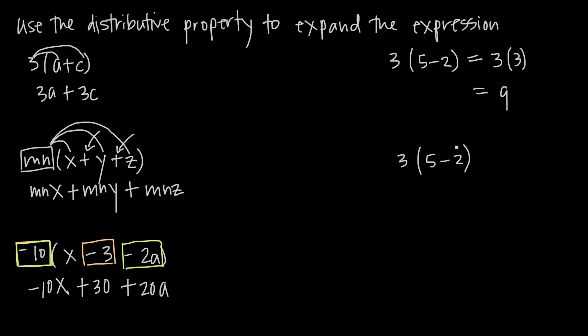If instead we use the distributive property that we just learned, we would distribute the 3 across the 5 and across the negative 2. So 3 times 5 gives us 15, and 3 times negative 2 gives us negative 6, or 15 minus 6. And we know that 15 minus 6 is 9. So you can see that the distributive property is a new tool that you can use to evaluate these kinds of expressions.